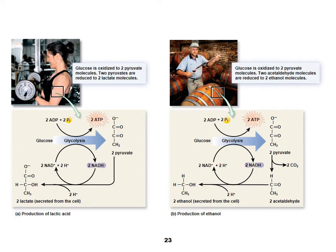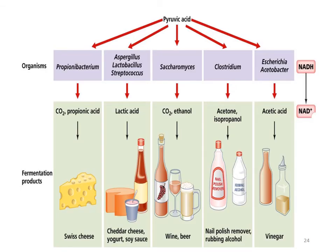Humans can do fermentation — the process we use ends up making lactate. You more likely think of yeast and ethanol fermentation when you think of fermentation. Many organisms use fermentation and there are many tasty products made because of fermentation. Our book says you produce carbon dioxide and ethanol or lactate, but what actually happens in fermentation depends on what kind of organism you are.